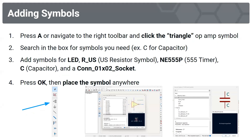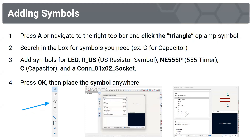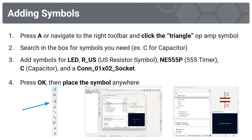Now we're going to move on to adding symbols. Press A or navigate to the right toolbar and click the triangle op-amp symbol. Then search in the box for the symbols you need, for example C for capacitor.